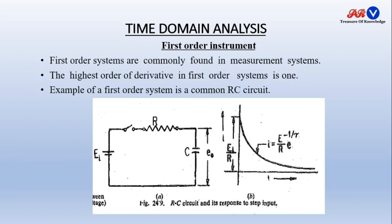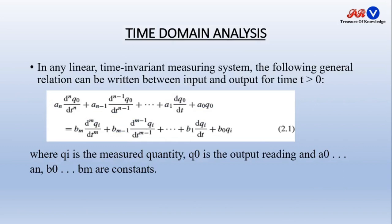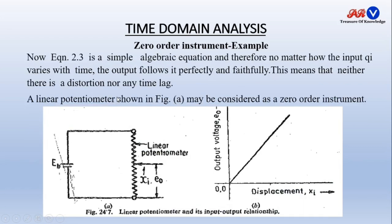Now we will see the first order instrument. First order systems or instruments are commonly found in measuring systems. The highest order of derivative in a first order system is one. An example of a first order system is a common RC circuit, as shown in the figure — input voltage, R, C, output — and the curve depicts the current which varies with time as (E/R)·e^(−t/τ). In first order instruments, only the first order derivative is present and higher order derivatives are 0.